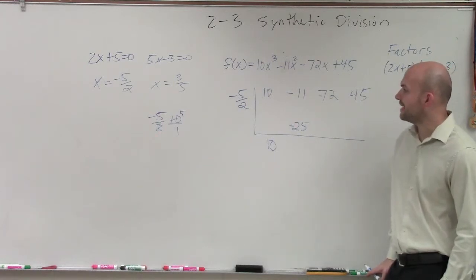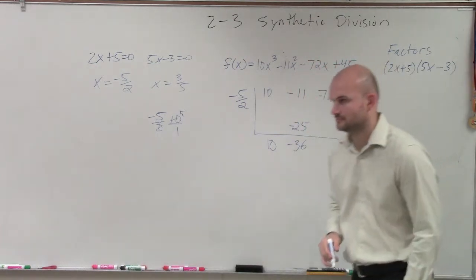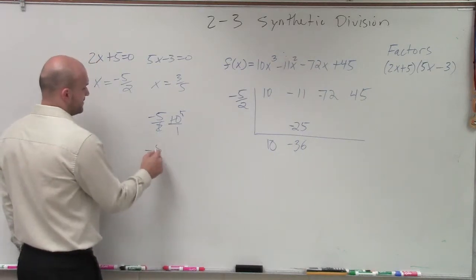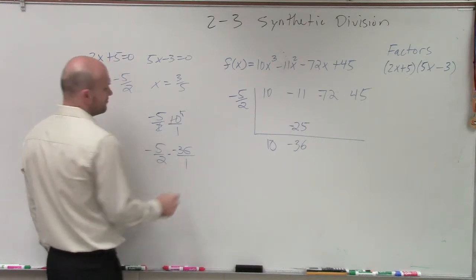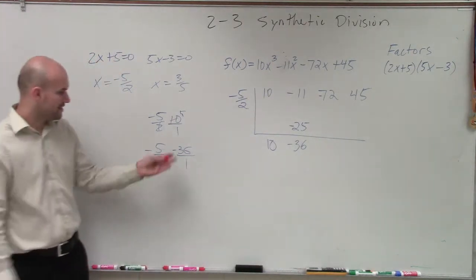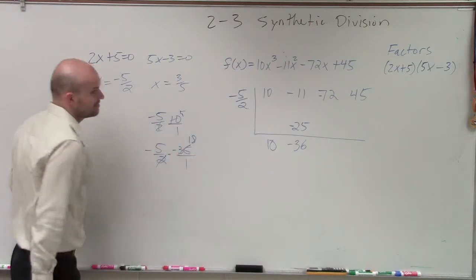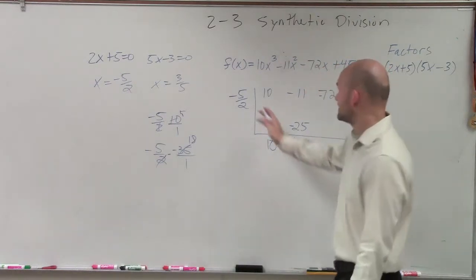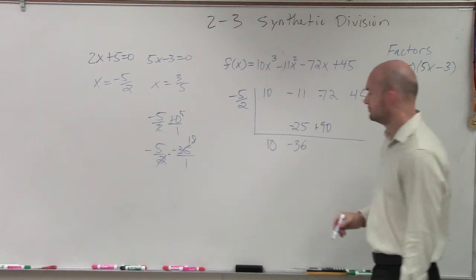So then I have negative 11 plus a negative 25 which is a negative 36. So now I have negative 5 halves times a negative 36. Put that over 1, and then multiply, simplify that to 18. So you have 36, 72, 90. And that's going to be now a positive 90.